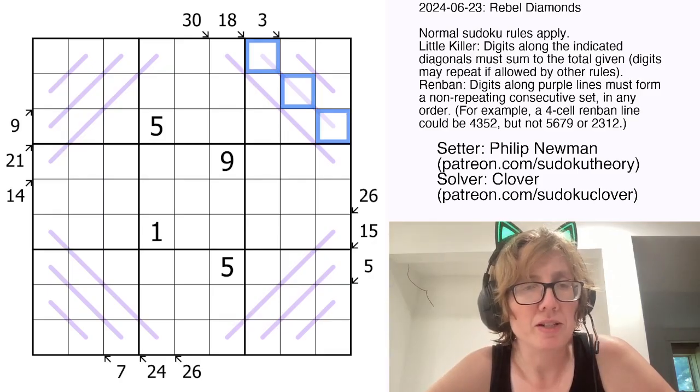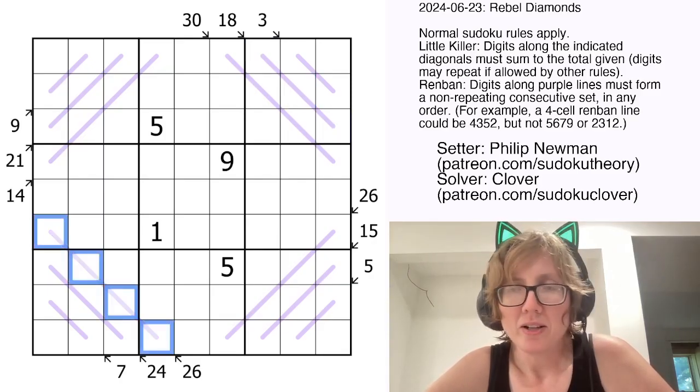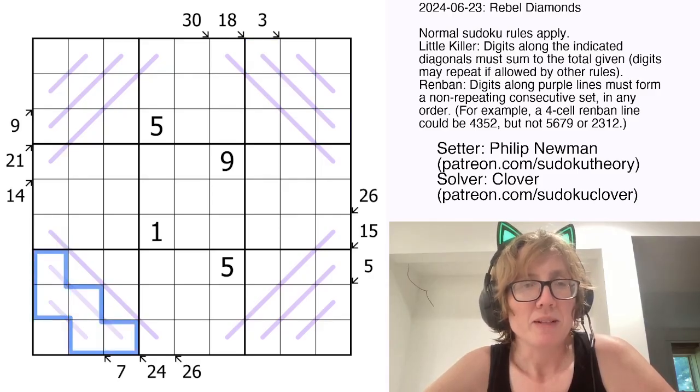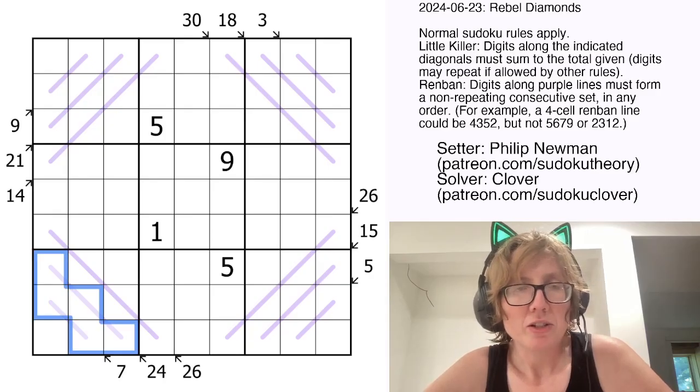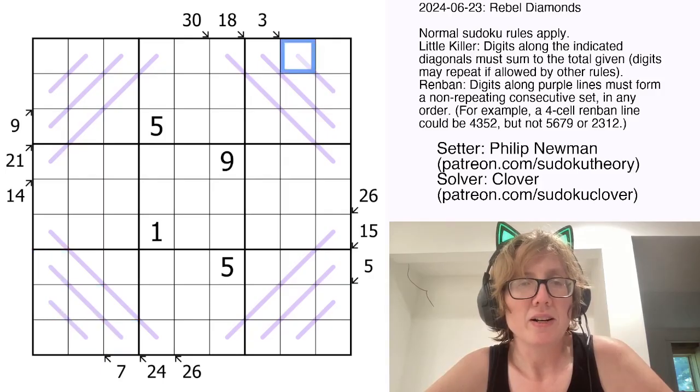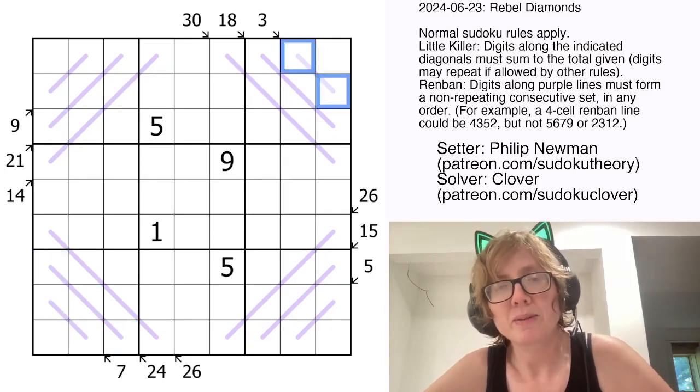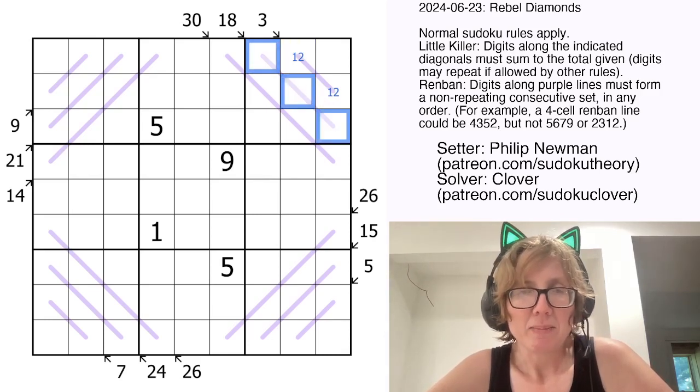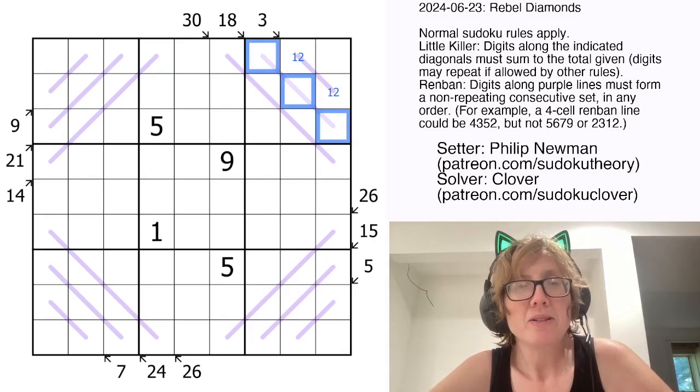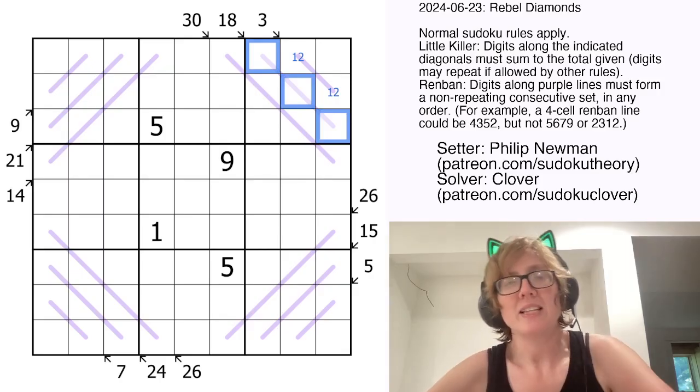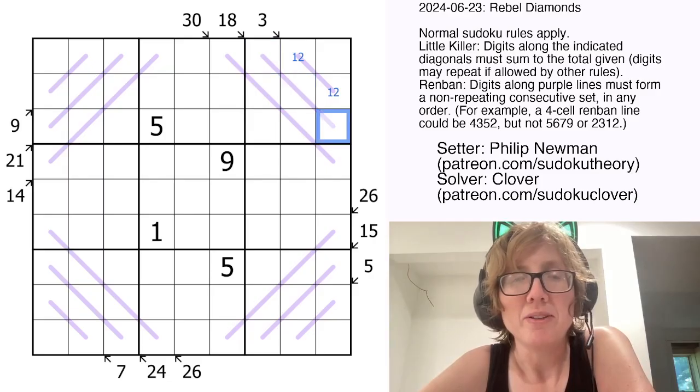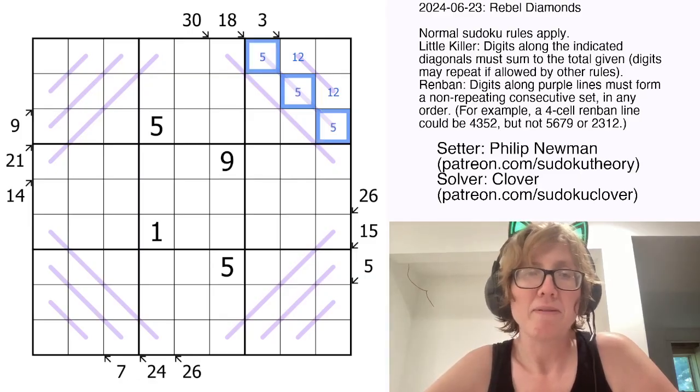And that is where we're going to start, because if you notice in this puzzle, all of these little killers overlap fully with a Renban line. So what we need to do is find a set of consecutive digits that sums to each of these clue values. 3 is probably the most straightforward one to start with. 3 is 1 plus 2. For 18, one thing you could do is take the length of this line, which is 3, and divide the clue value by it. That would give you the middle number. So 18 over 3 is 6, therefore the middle number is going to be 6. That'll be 5 6 7.